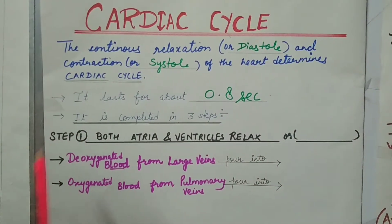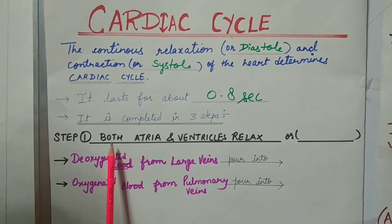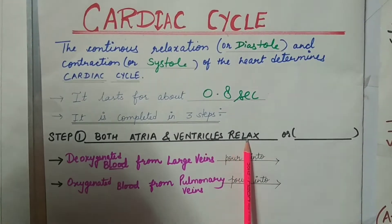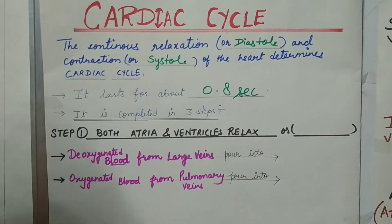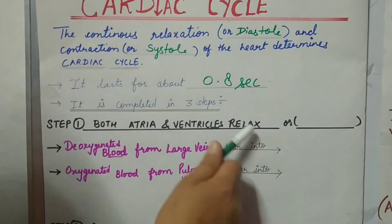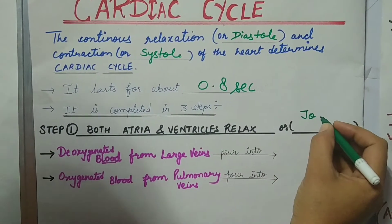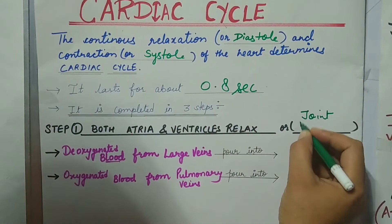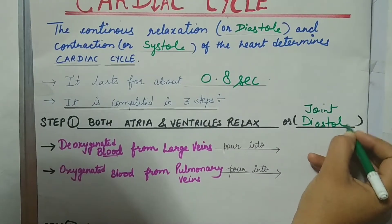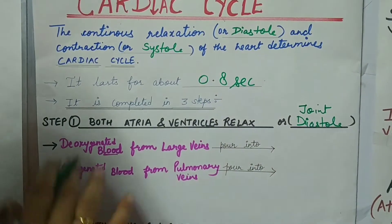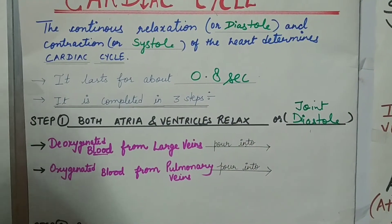Step one is when both atria and ventricles relax. Relaxation is also called diastole, so this step is called joint diastole. At this phase, all four chambers relax — that's why it is called the diastole phase.